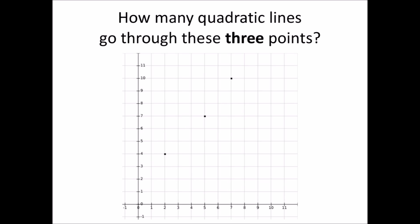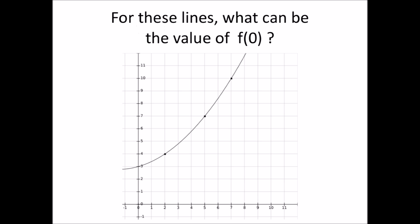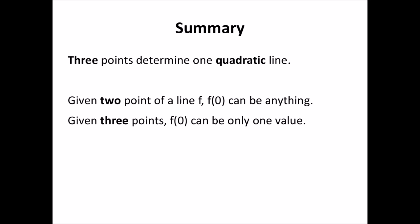However, when we are given three points, they determine one unique quadratic line. Therefore, given three points, they also determine one unique value for f of 0. So, similar to what we had for straight lines, for a quadratic line we need at least three points to determine the line and its value at f of 0. Otherwise, any value for f of 0 is possible.